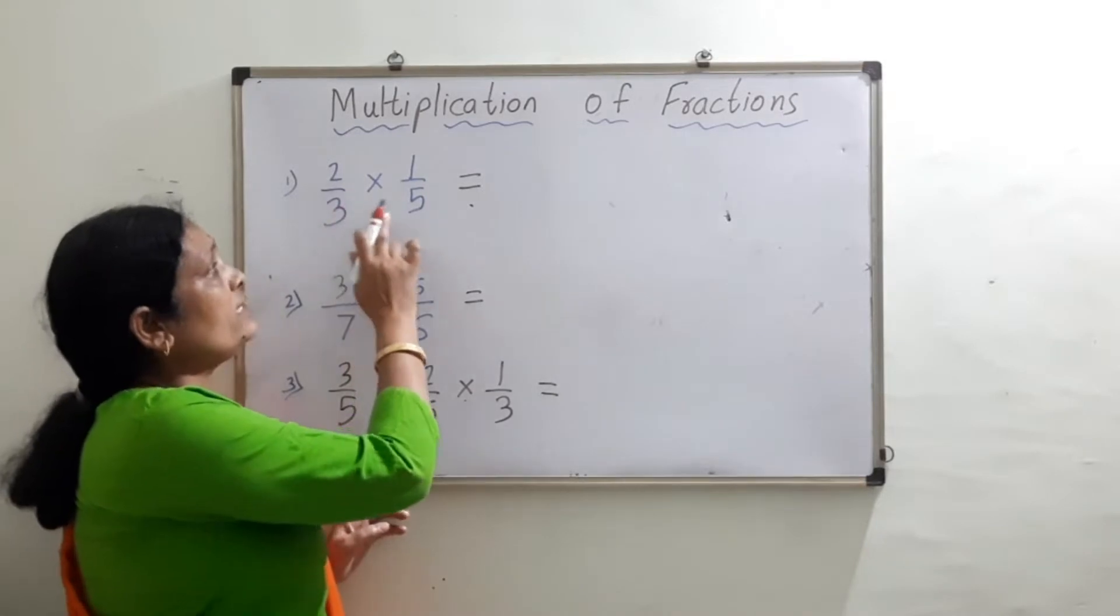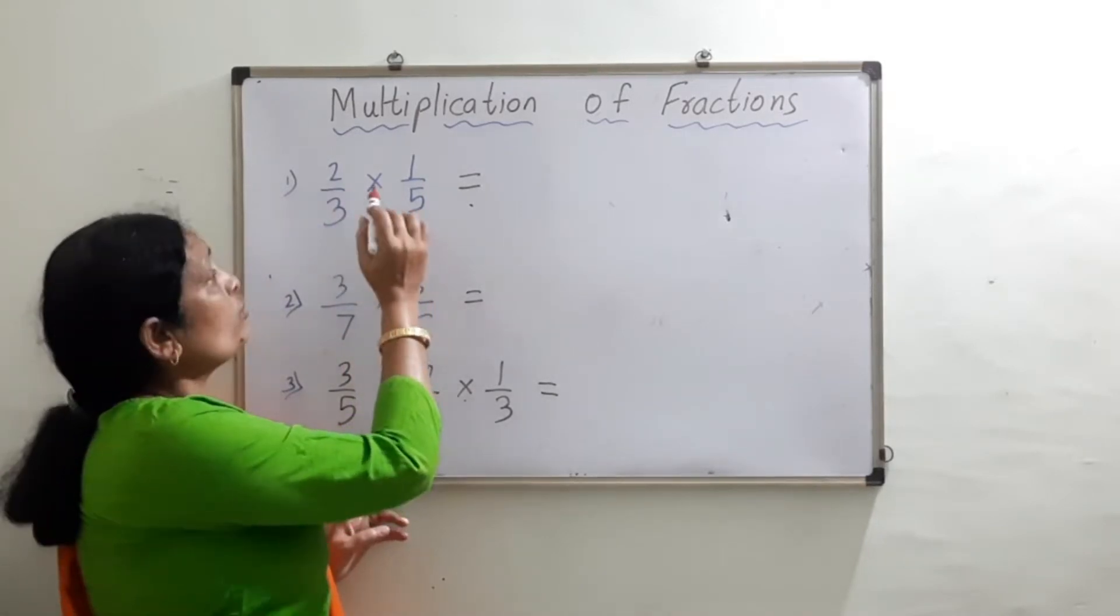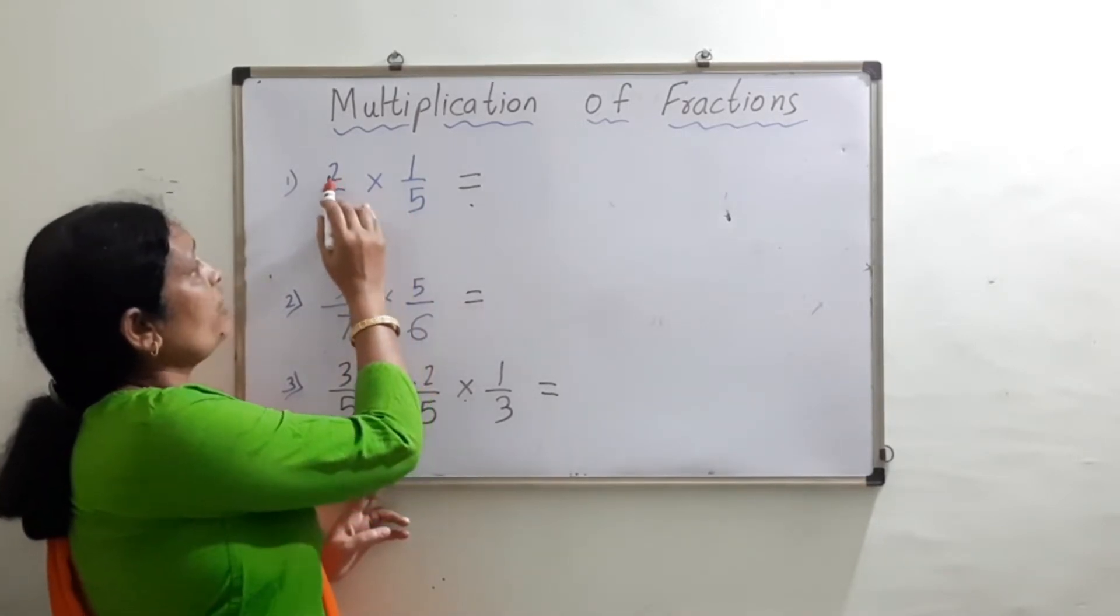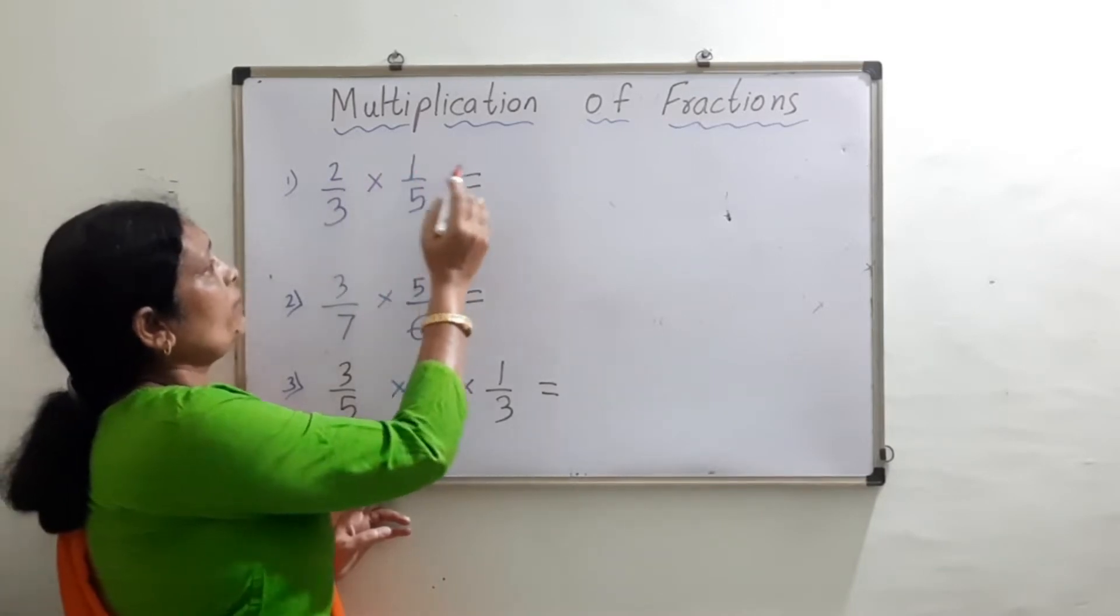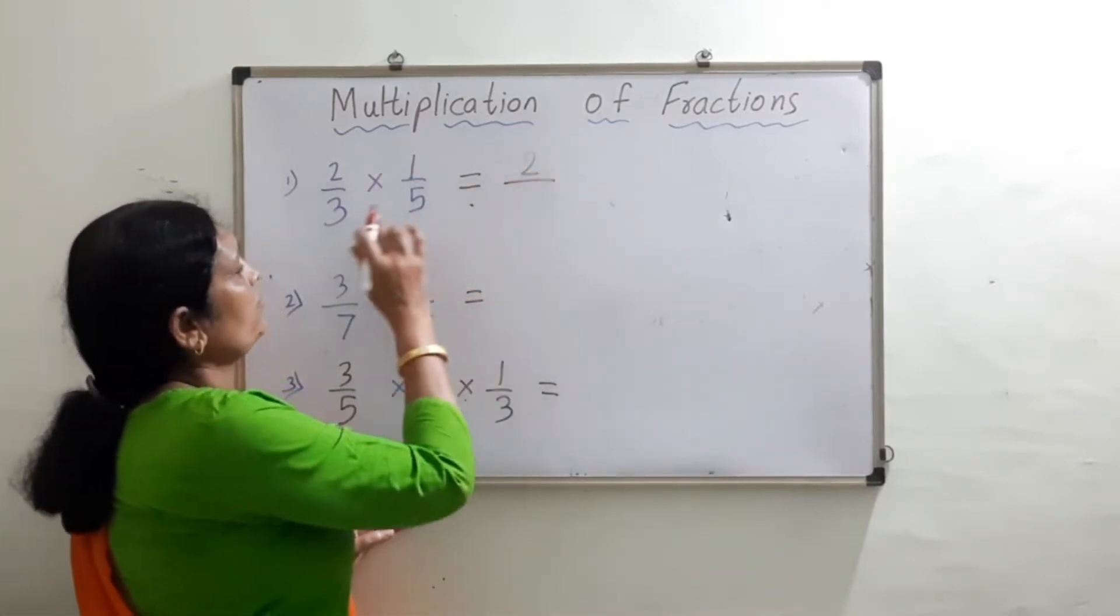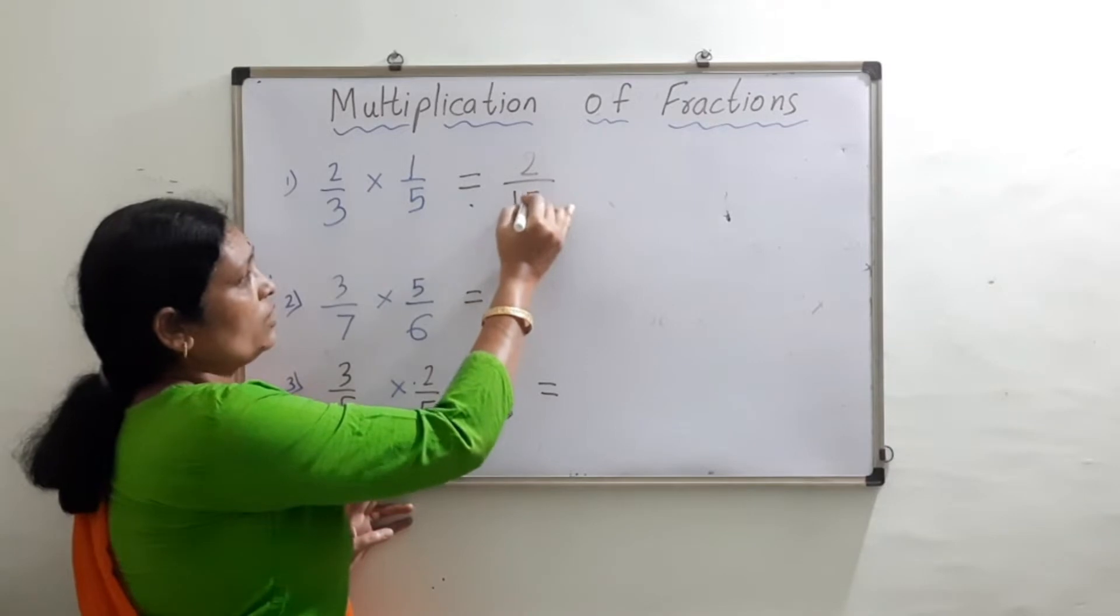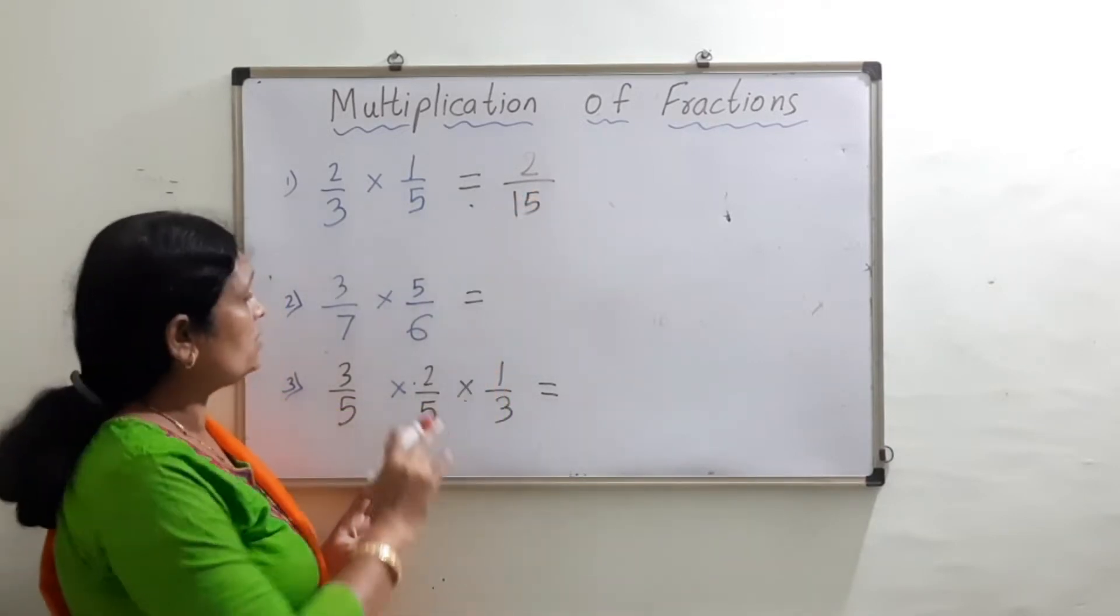So 2 thirds multiply by 1 fifth. Remember children, we will just multiply numerator by numerator. So 2 into 1 is 2, and 3 into 5 is 15. So our answer is 2 upon 15.